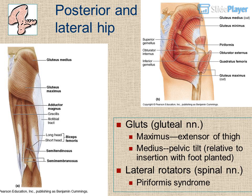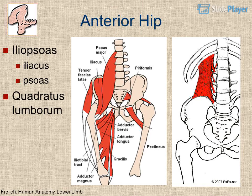Posterior and lateral hip muscles: gluteus maximus (gluteal nerve) is an extensor of the thigh; gluteus medius controls pelvic tilt relative to insertion with foot planted. Lateral rotators are innervated by spinal nerves, including piriformis (piriformis syndrome). The anterior hip includes the iliopsoas — quadratus lumborum, iliacus, and psoas.